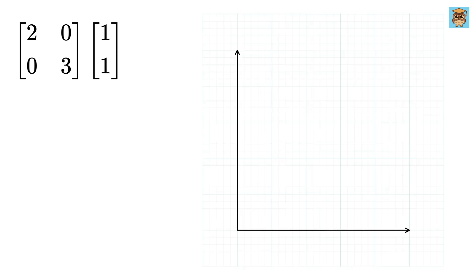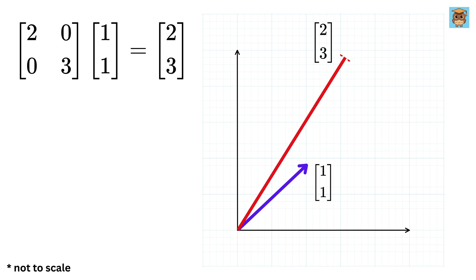Suppose we take a matrix with the first row as 2 and 0, and second row as 0 and 3. Now multiply this with a vector 1 and 1, which looks like this vector. After multiplication, the output vector becomes 2 and 3. This means the original vector 1 and 1 got stretched, and it was also rotated a bit.